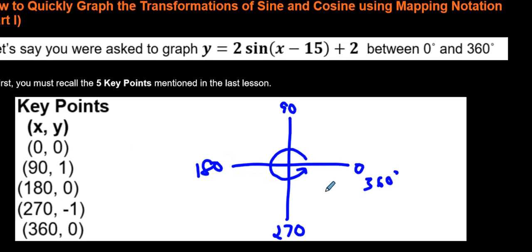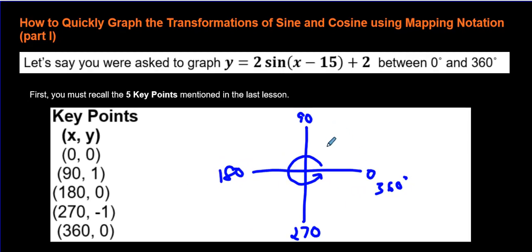One more thing this video assumes that you know, it's good to know what this video is assuming, otherwise things can get really confusing, are the five key points that are written right here. This video assumes that you recall the five key points. Those five key points are at 0, 90, 180, 270, and back to 360 again. And those five key points are actually right here.